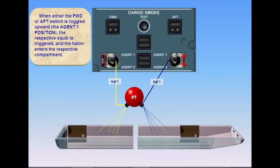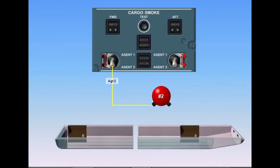When either the forward or aft switch is toggled downward to the agent two position, the respective squib on bottle number two is triggered and the halon enters the respective compartment.